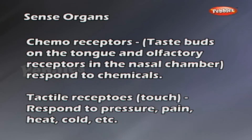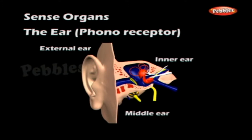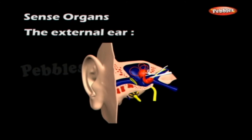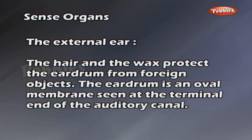The Ear - Phonoreceptor. The ears are organs of hearing and balance. They have three parts, namely the external ear, the middle ear, and the inner ear. The fleshy part outside the head is called the pinna. It is followed by the external auditory canal. This passage is lined with hair and sebuminous glands. These glands produce sebum, or earwax. The hair and the wax protect the eardrum from foreign objects. The eardrum is an oval membrane seen at the terminal end of the auditory canal.